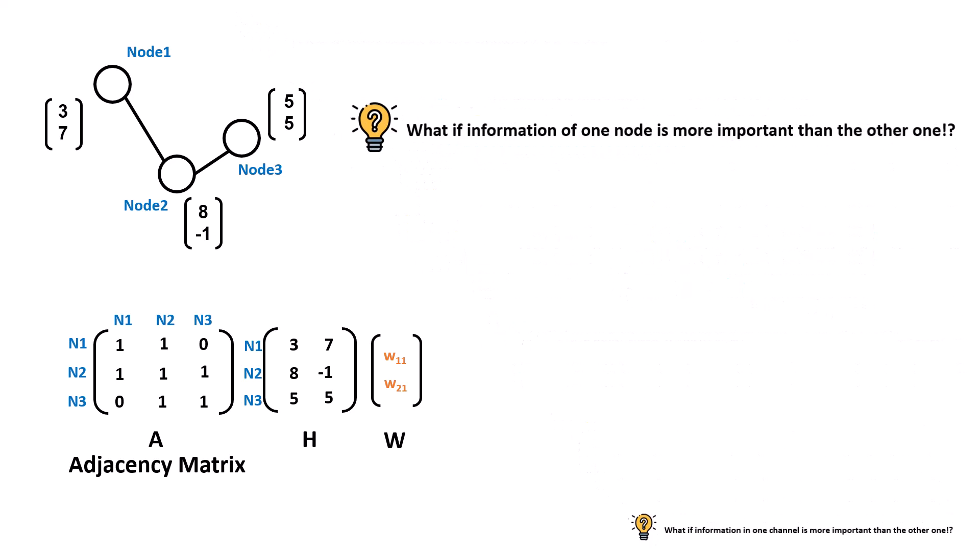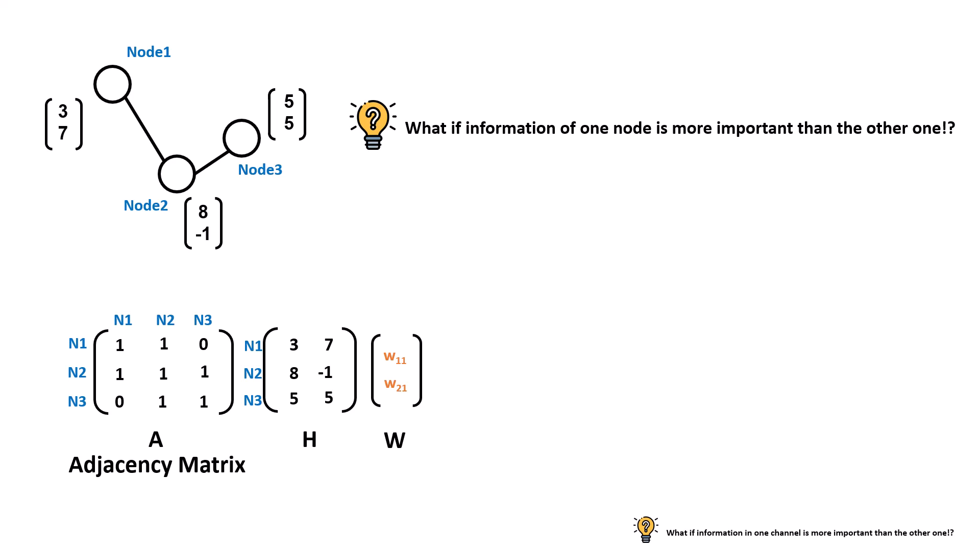As for the second question — what if one node's information is more important than another's — that is handled by another variant called graph attention networks. Based on the attention mechanism, it assigns different weights to different edges instead of simply assigning a value of 1. But that is another topic not covered in this video.